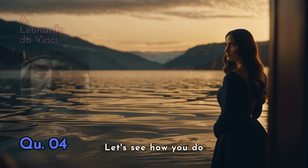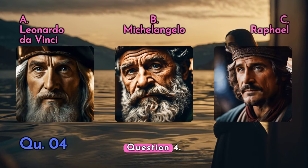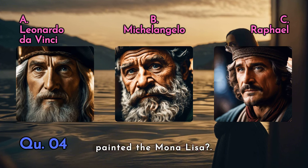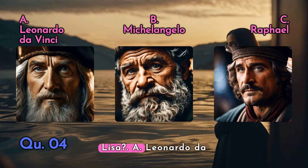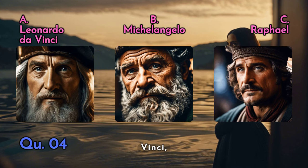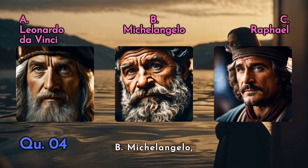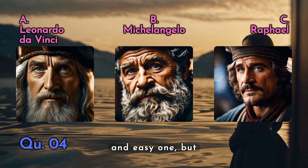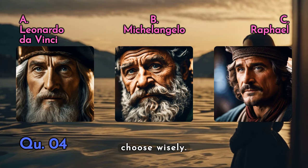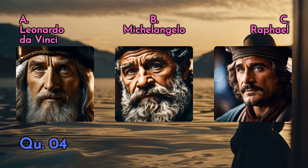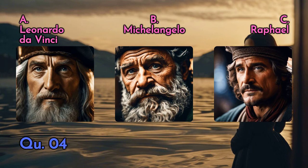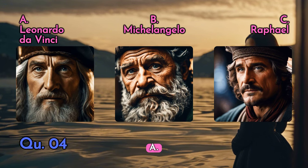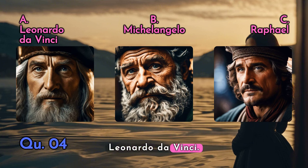Let's see how you do with this one. Question four: who painted the Mona Lisa? A — Leonardo da Vinci, B — Michelangelo, C — Raphael. Maybe an easy one, but choose wisely. The answer is A — Leonardo da Vinci.